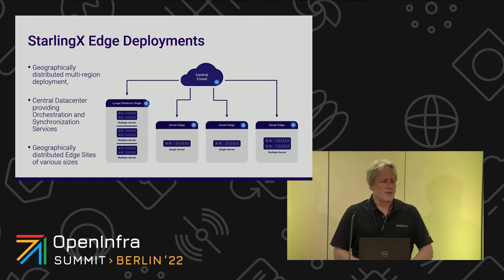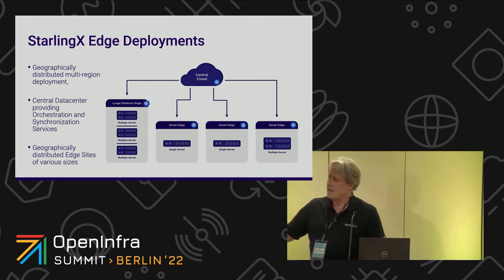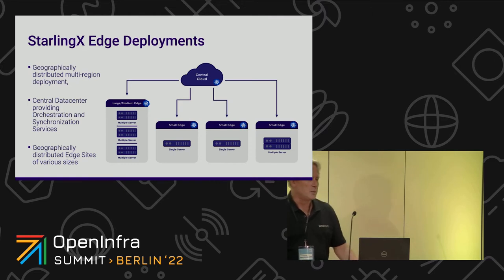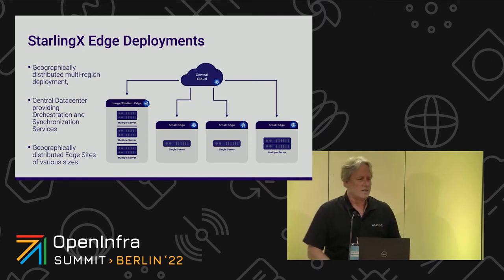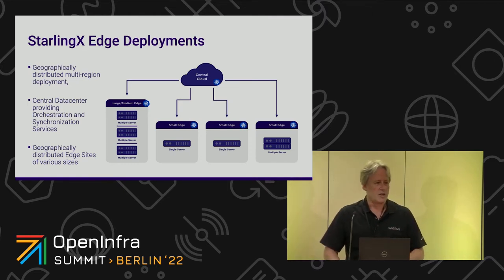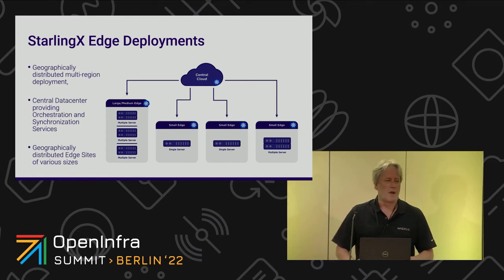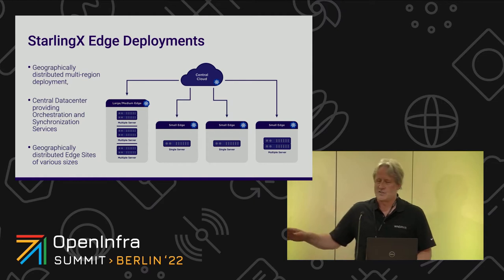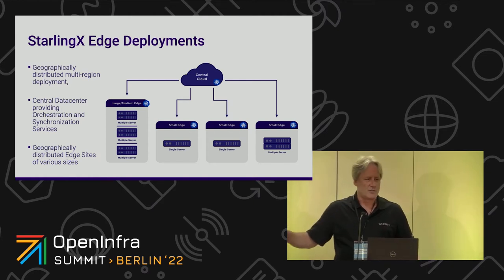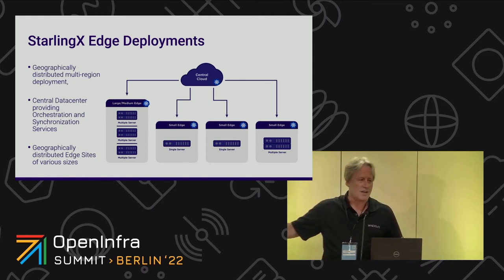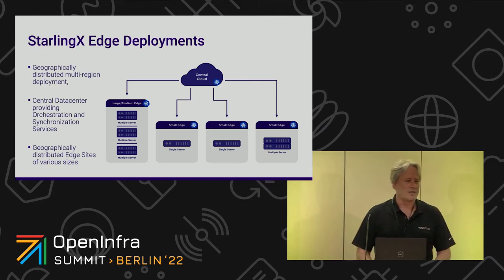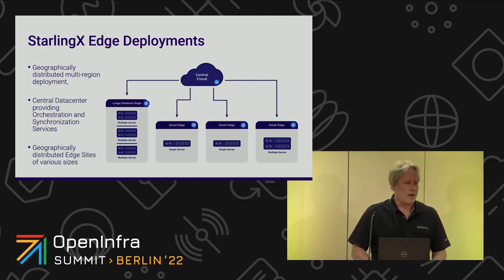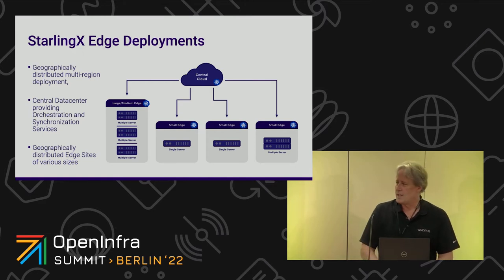One of the other configurations we have is what we call distributed cloud. In distributed cloud, we take a central cloud and run it as a control plane — doing monitoring, controlling, deploying, updating, and also acting as a registry for all these sub-clouds. The sub-clouds themselves — these individual clouds — are all autonomous. They're all their own Kubernetes cluster, and they're all typically targeted at high availability and low latency applications.